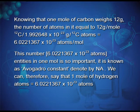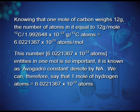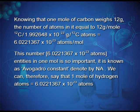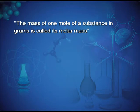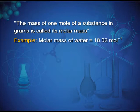This number, 6.0221367 × 10²³ entities per mole, is known as Avogadro's constant, denoted by Nₐ. Therefore, 1 mole of hydrogen atoms = 6.0221367 × 10²³ atoms. The mass of 1 mole of a substance in grams is called its molar mass — for example, the molar mass of water is 18.02 g/mol.